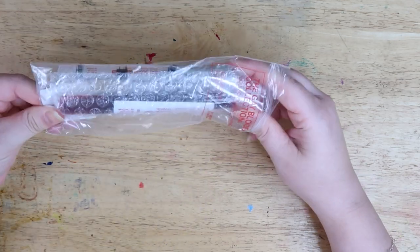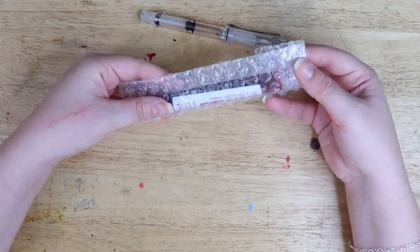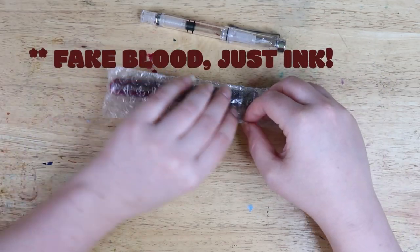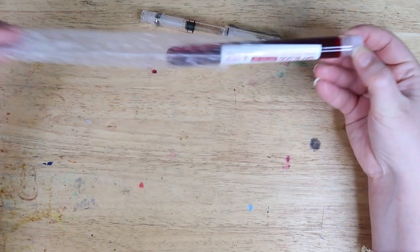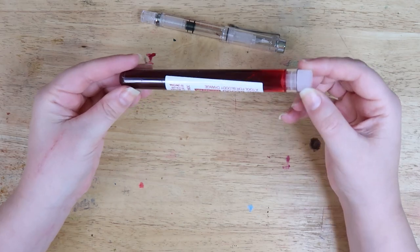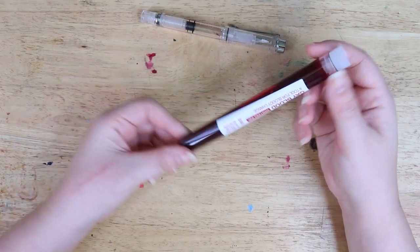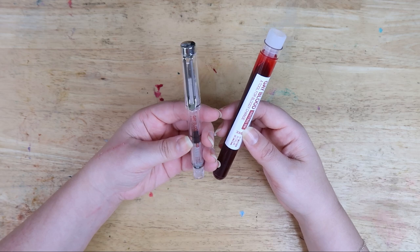Stuart Semple over at Culture Hustle has made this fountain pen which has ink that is made with blood. This is very interesting and very cool. Look at this. It's so cool.